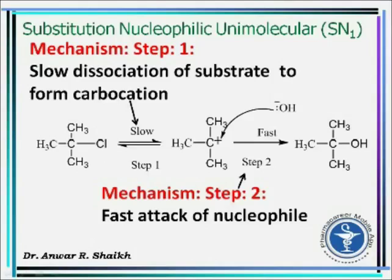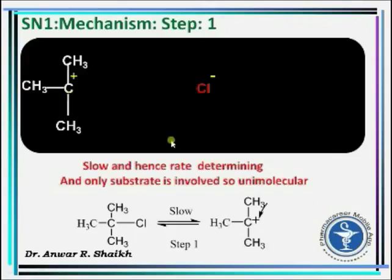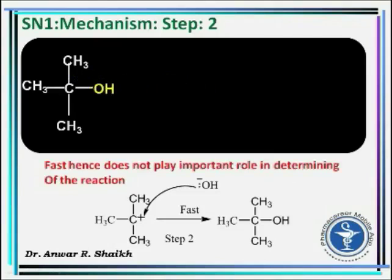The mechanism of SN1 reaction takes place in two steps. Step one is the slow dissociation of the substrate to form the carbocation. Step two is the fast attack of the nucleophile on the carbocation to form the product. Since step one is slow, it is the rate determining step, and only the substrate is involved, making it unimolecular. In step two, the incoming nucleophile attacks the electron deficient substrate carbon and forms the product; as this is a fast step, it does not play an important role in the rate determining step of the reaction.